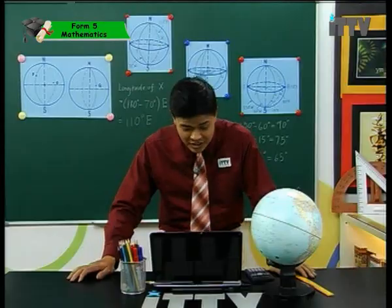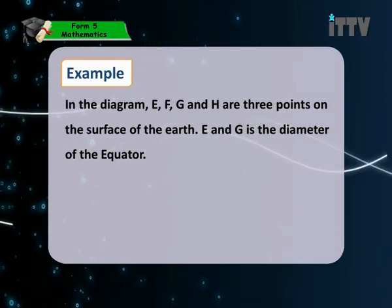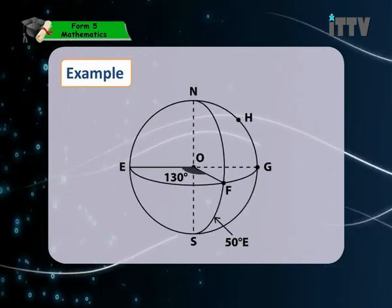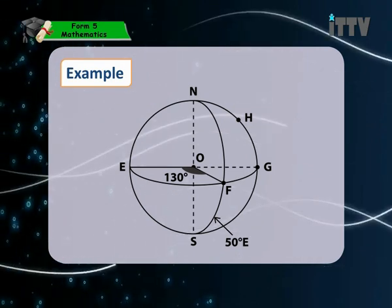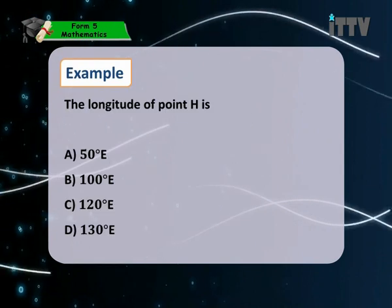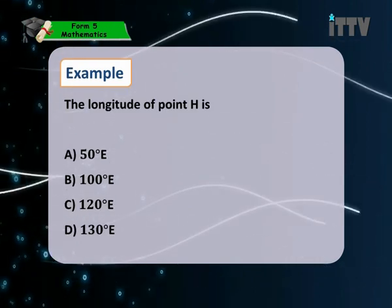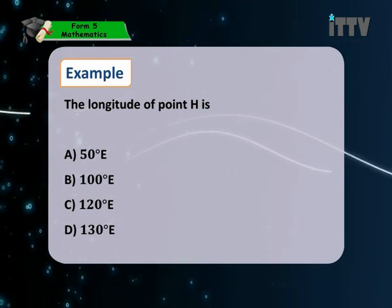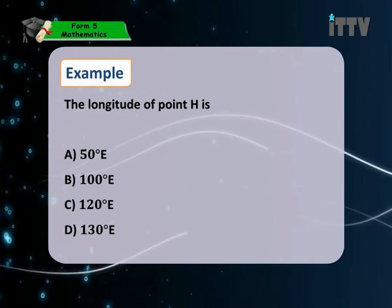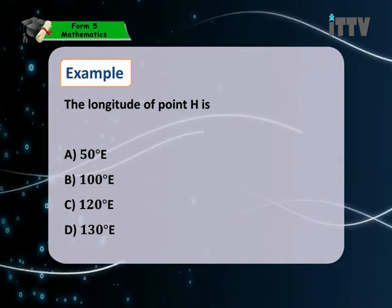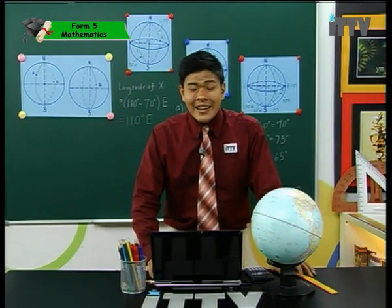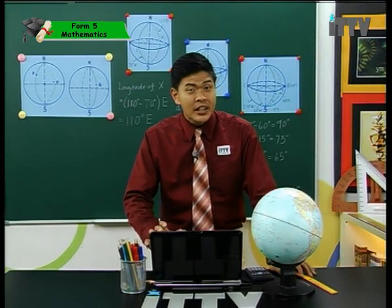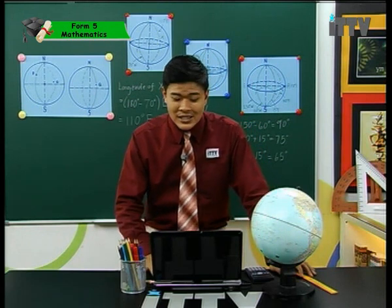Try this example: in the diagram, E, F, G and H are points on the surface of the earth, and E and G form the diameter of the equator. The longitude of point H is — is it A: 50 degrees east, B: 100 degrees east, C: 120 degrees east, or D: 130 degrees east? The answer is B, 100 degrees east. Analyze the position and apply the properties we have learned.